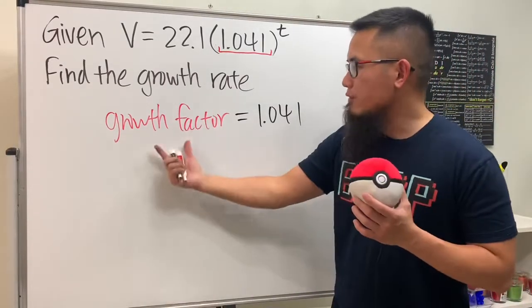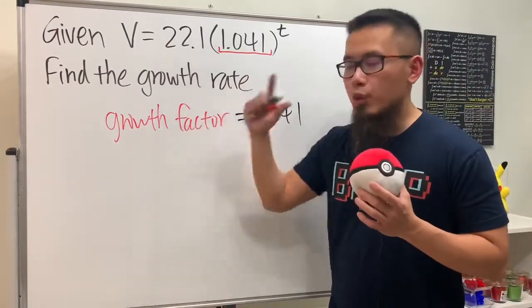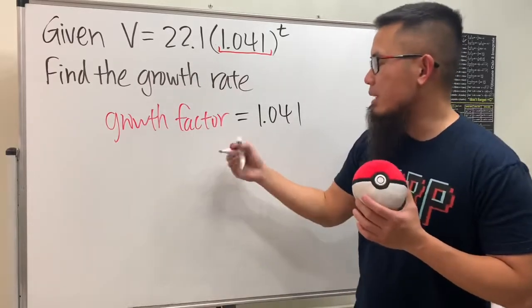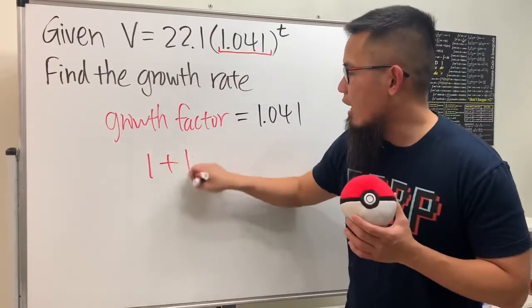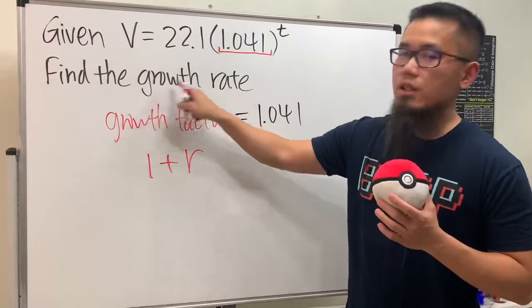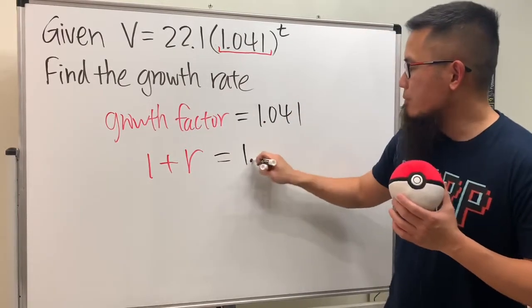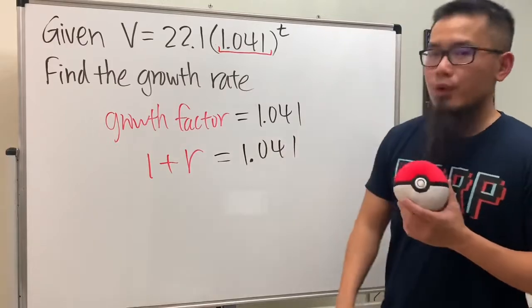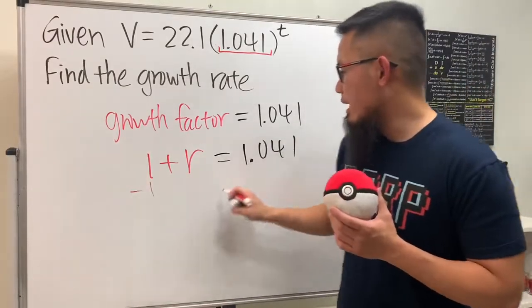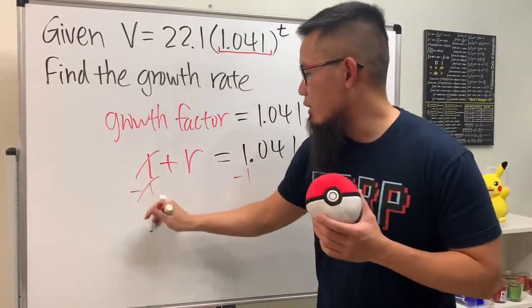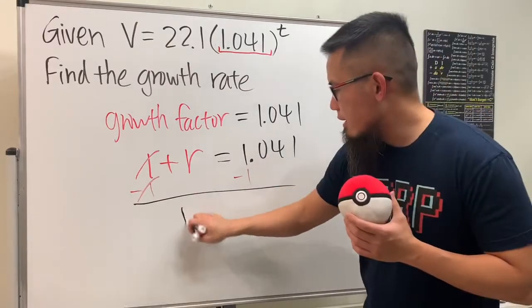the connection between the growth factor and the growth rate, which says the growth factor is the same as 1 plus r, and r is exactly the growth rate. So we have 1 + r = 1.041. We can just minus one on both sides - they cancel, so we are looking at r